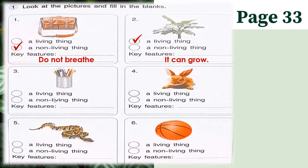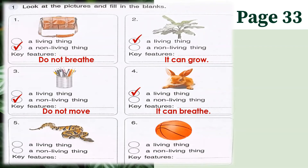Next we have number three — these are pictures of pen and pencils. Is this a living thing or non-living thing? Of course, pen and pencils are non-living things. Can you give me at least one feature of this non-living thing? Because they do not move. Next, number four — what is this animal? It's a rabbit. Is a rabbit a living thing or non-living thing? Of course it's a living thing. Can you give me one feature of a living thing? It can breathe — just like us humans, they can breathe.